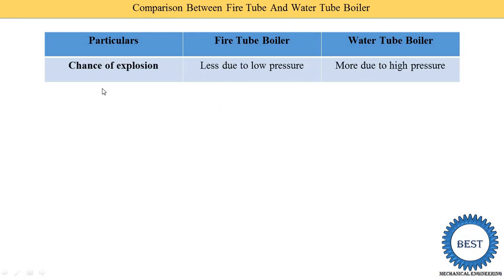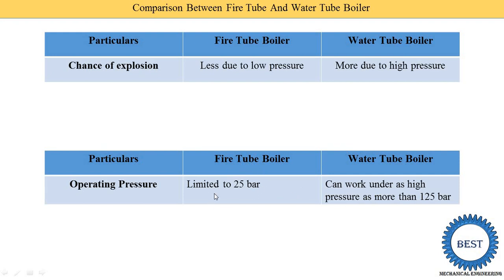Next point is chances of explosion — meaning chances of blast or collapse of the boiler. Fire tube boiler has less chances due to the lower pressure. And water tube has more chances due to the high pressure. Fire tube is limited to 25 bar so it has a low chance, but in water tube the pressure is more than 125 bar, so the water tube boiler has more chances of blast or explosions compared to the fire tube.